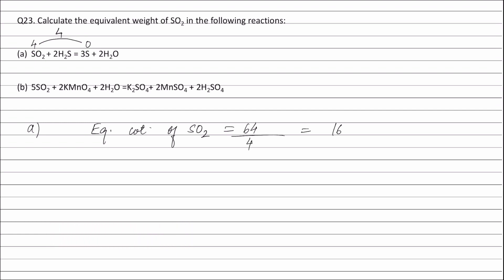In equation B, sulfur dioxide plus KMnO₄ plus H₂O forms K₂SO₄ plus MnSO₄ plus H₂SO₄. The oxidation number of sulfur in sulfur dioxide is 4, and the oxidation number of sulfur in the products formed is 6. Therefore, the change in oxidation number of sulfur is 2.